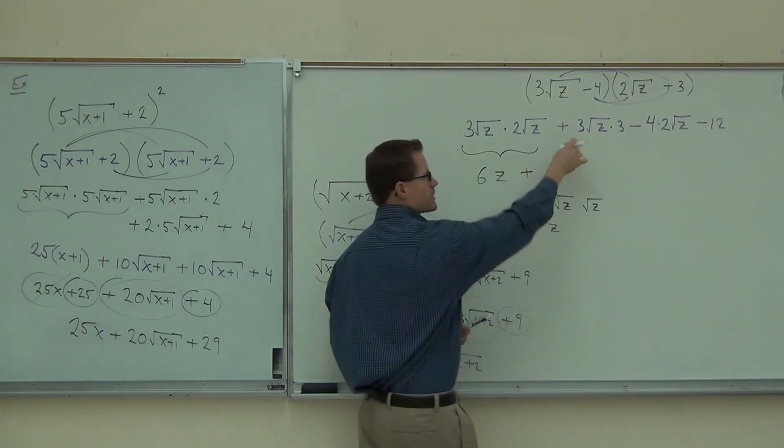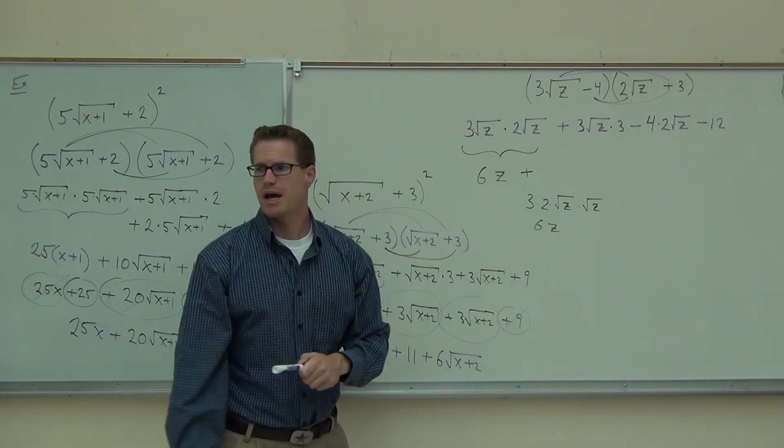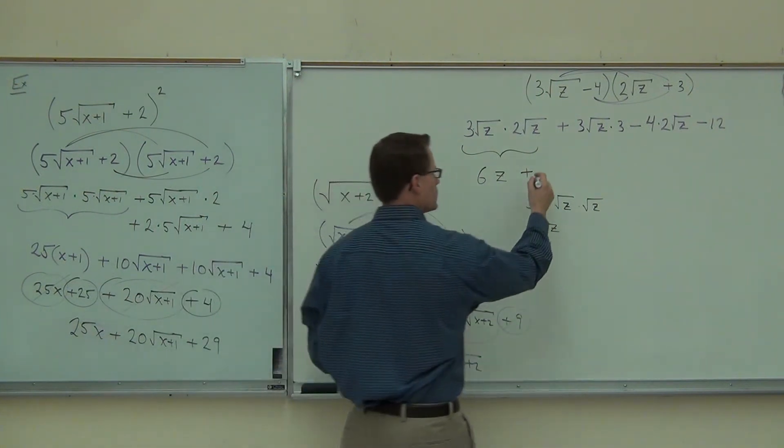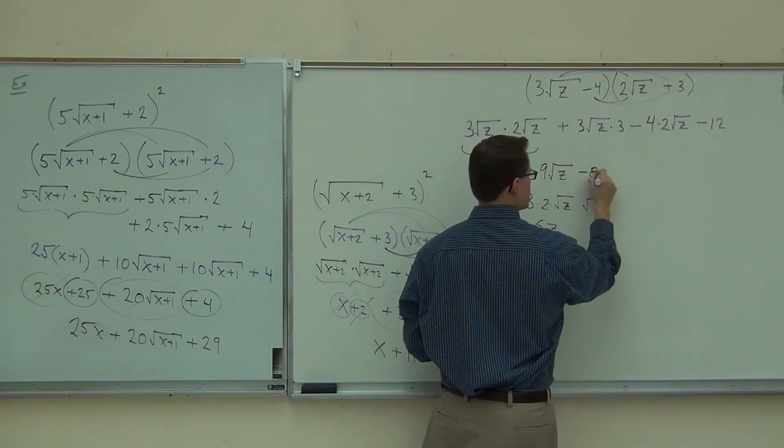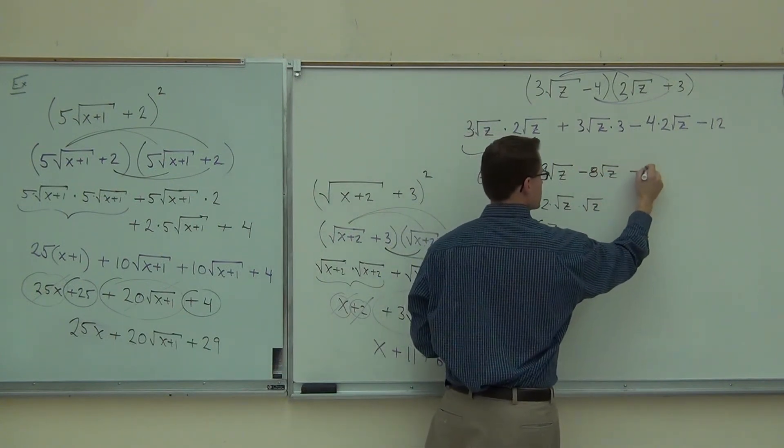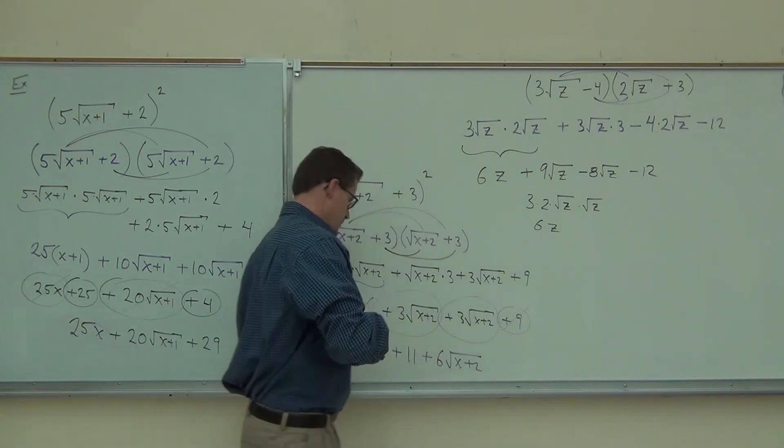After that, well, it's kind of nice. We just have 3 root z times 3. How much is that going to give you? Then I know that's going to be minus 8 root z. And lastly, that minus 12. Well, that's not going to change. We've already done that now.